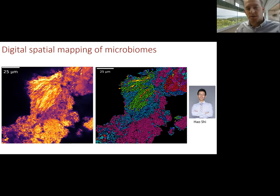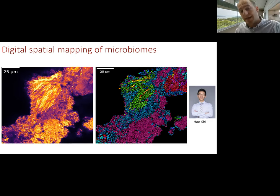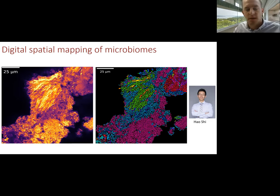Hao developed a technology that allows us not to make a list but rather a map of dense microbial communities, such as those found in the gut or in biofilms. This is an example image showing a raw imaging result alongside the spatial digital map we've created from it. In the next few slides I'll explain how the technique works and how we convert this raw image into this digital map.